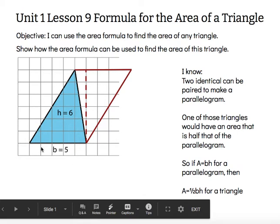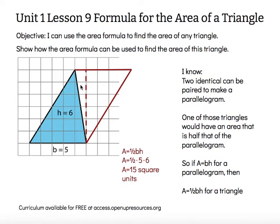So I have a base of 5 and a height of 6. I can plug that into my formula. So my base is 5, my height is 6, so I have area equals 1 half times 5 times 6.